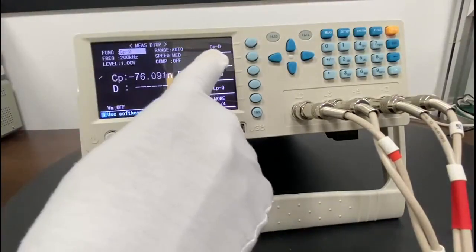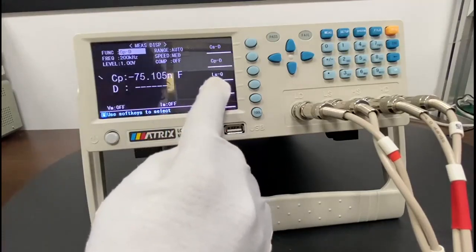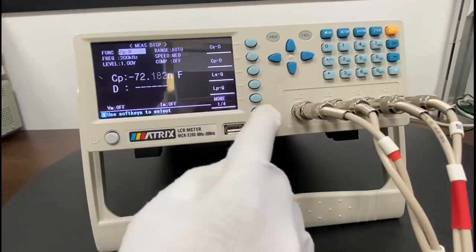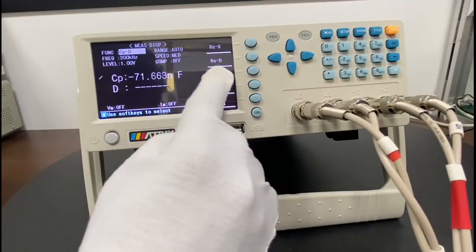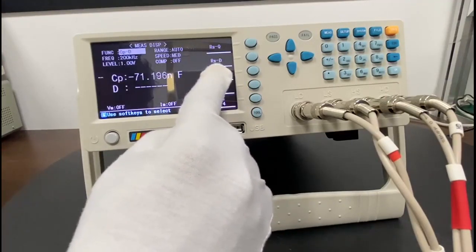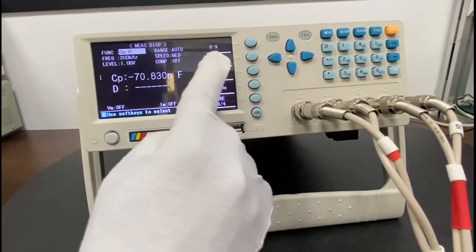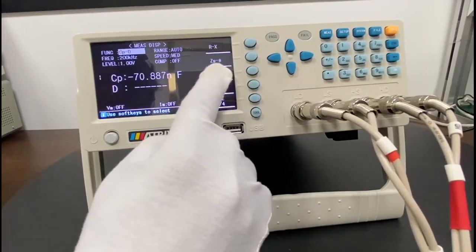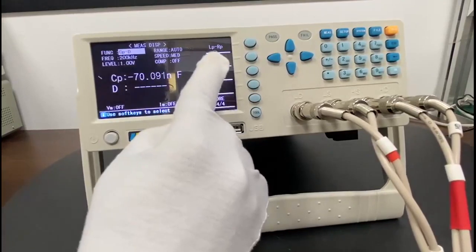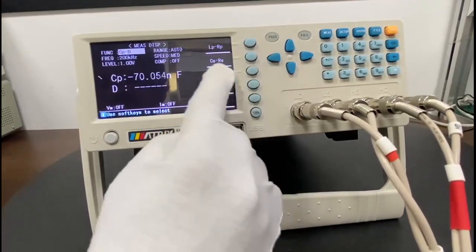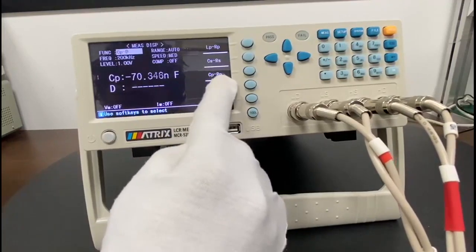So let me explain these menus first. CS means this option is used to measure the capacitor in series, capacitor in parallel. And LS means inductance in series, inductance in parallel. Go to more options, RS means series equivalent resistance, resistance in parallel mode. And go to more, R means resistance, ZS means series equivalent impedance. We can also measure the impedance. Go to more over here, LP means inductance, CS means capacitance in series, and capacitance and resistance in series, capacitance and resistance in parallel mode.